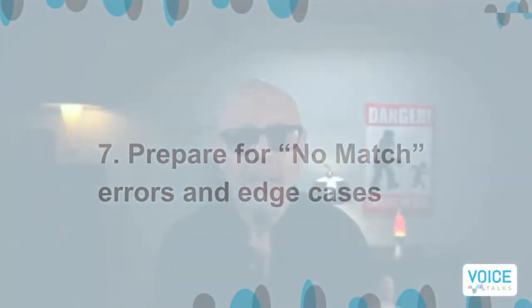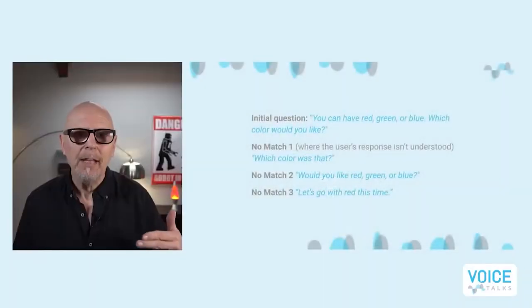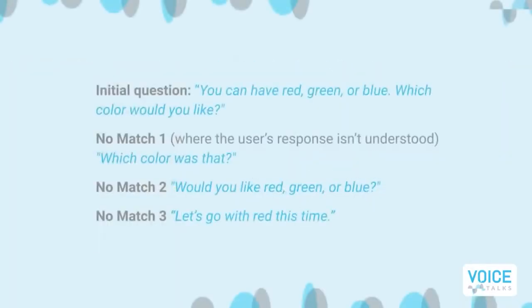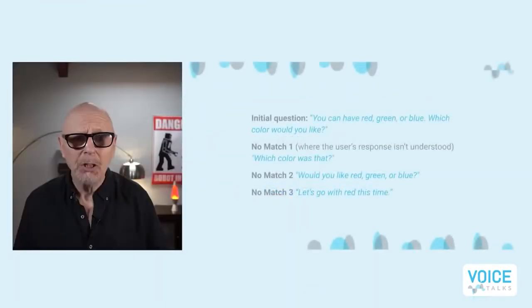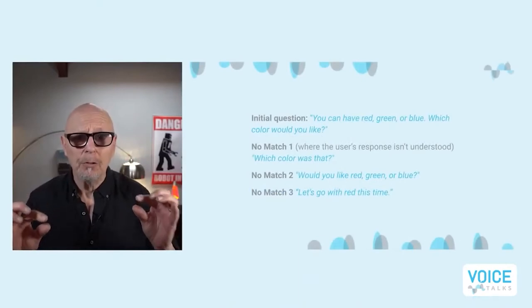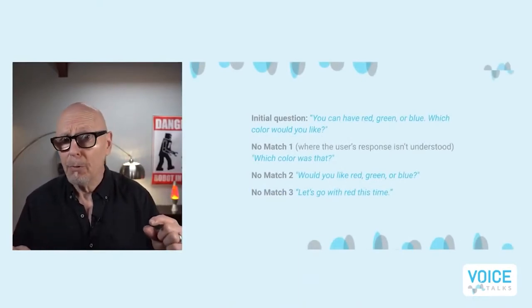Number seven, prepare for no match errors and edge cases. We recommend escalating error handling and context-specific prompting to give users multiple opportunities to re-engage when there's a choice to be made or a question answered. At each choice point of your experience, determine if a user response is required or if you can elegantly move users forward without hearing their choice. In an escalating error strategy, say the initial question is, "You can have red, green, or blue. Which color would you like?" If there's a no match where the user's response isn't understood, standard practice would be a rapid re-prompt, like, "Which color was that?"